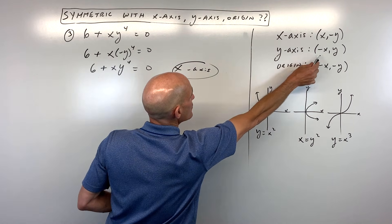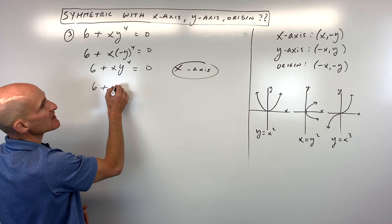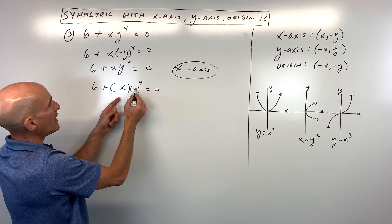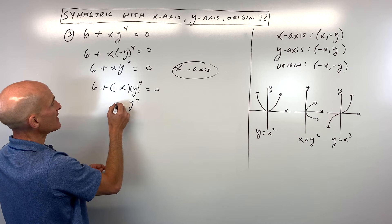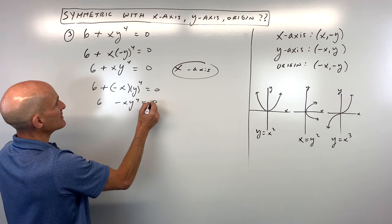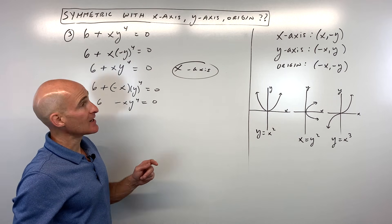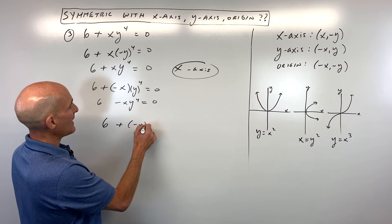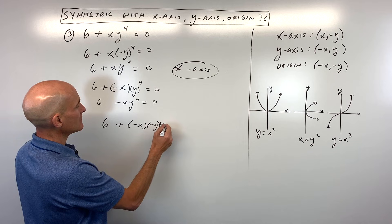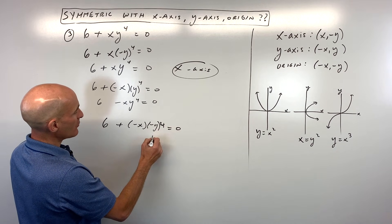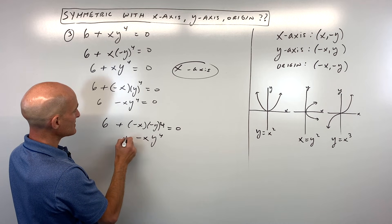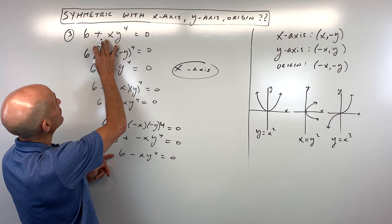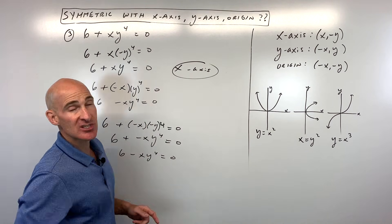For the y-axis test, replace x with negative x and y with positive y. y to the fourth times negative x gives negative xy to the fourth. That does not look like the original — so it's not symmetric with respect to the y-axis. For the origin, making both x and y opposite: a negative to an even power is positive y to the fourth times negative x, which simplifies to 6 minus xy to the fourth. That also does not match the original. So it looks like it's just x-axis symmetry.